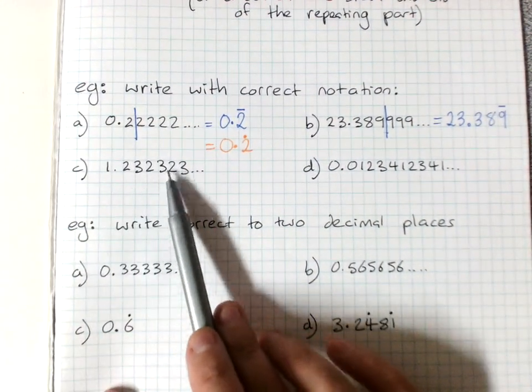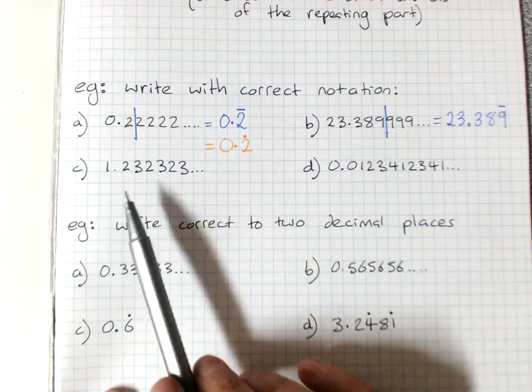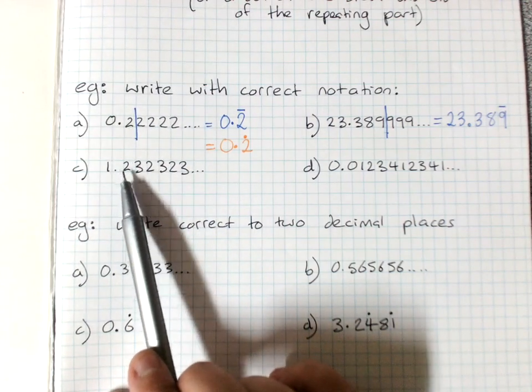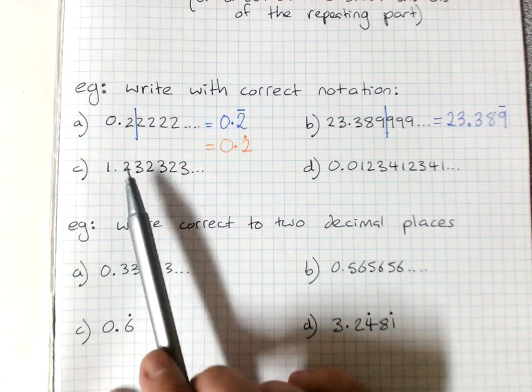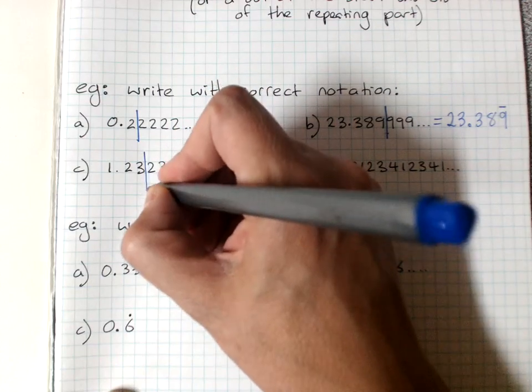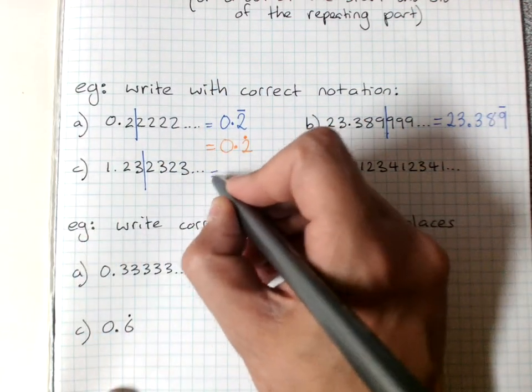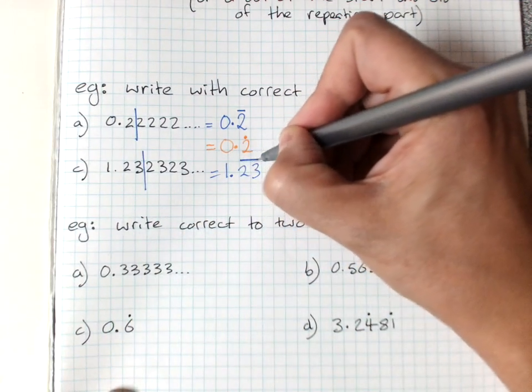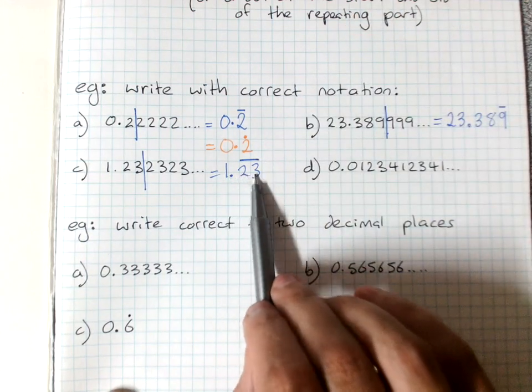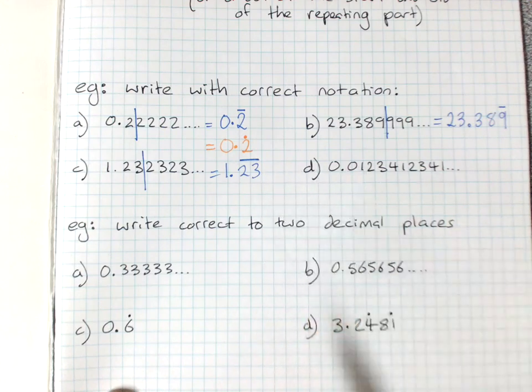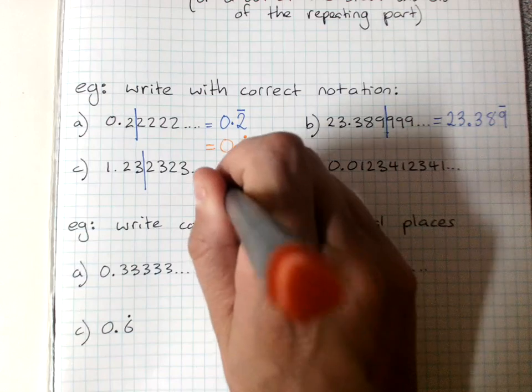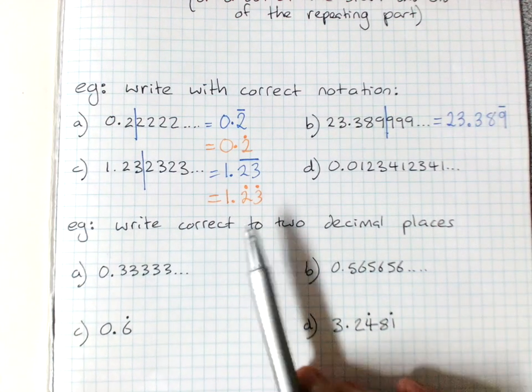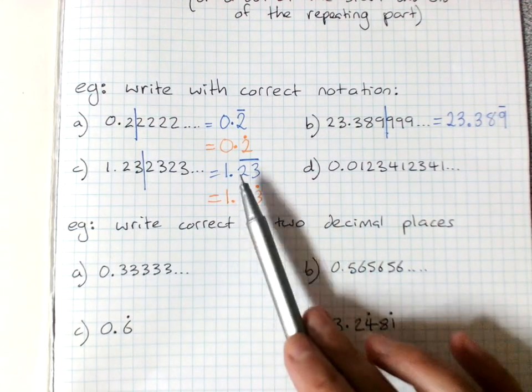Have a look at this one: 1.232323. Now, you've got to be careful. Is the repeating pattern 23 or 32? Look for where the repeating pattern starts. It goes from the 2 first, then the 3. So the repeating pattern is 23. Cut it off after one copy of it. Rewrite: 1.23. And put a bar over the whole repeating pattern part. And that says the number is 1.23, and then the 2.3's go on forever. 2.3, 2.3, 2.3. Again, if you were writing this with the dots, it's still cut it off, but it's a dot at the start and end of the repeating pattern. So that would be quite correct as well. But the bar is easier.